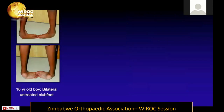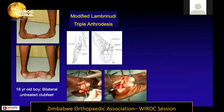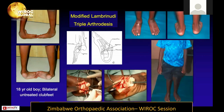You also see children who come much older. An 18-year-old boy with bilateral untreated clubfeet may need more disabling surgeries such as triple arthrodesis done in the form of the modified Lambrinudi procedure. In the short term these feet become plantigrade, but not necessarily pain-free. In the long term, these are quite radical and disabling surgeries — they give good short-term correction but can become painful with recurrences.